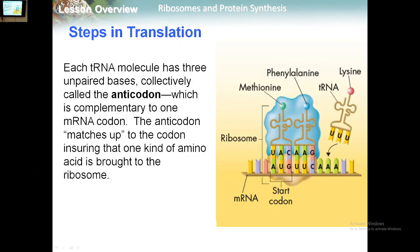Each tRNA molecule carries three complementary bases called the anticodon, and at the same time it carries the amino acid that is complementary to that anticodon. So U-A-C, which faces A-U-G, brings methionine — the starting amino acid. Then phenylalanine is brought by tRNA with anticodon A-A-G, facing codon U-U-C. Finally, codon A-A-A is faced by anticodon U-U-U, giving us lysine — each anticodon complementary to one mRNA codon.